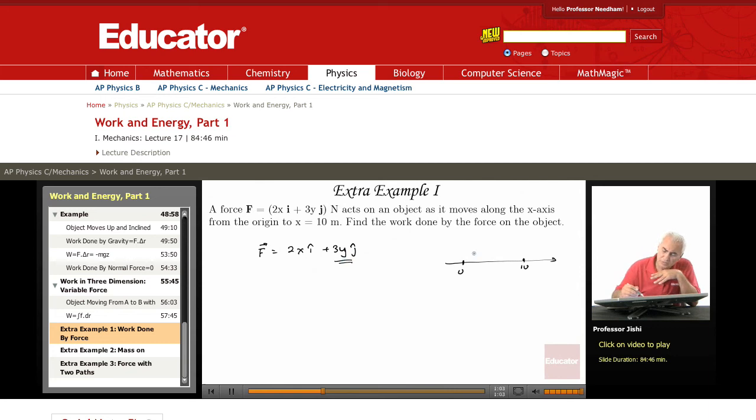As the object moves from 0 to 10, it's moving along the x-axis. So along the x-axis, y is 0. So this force is 0 anyway. Along the path of the particle, this force is 0. So it doesn't do any work.